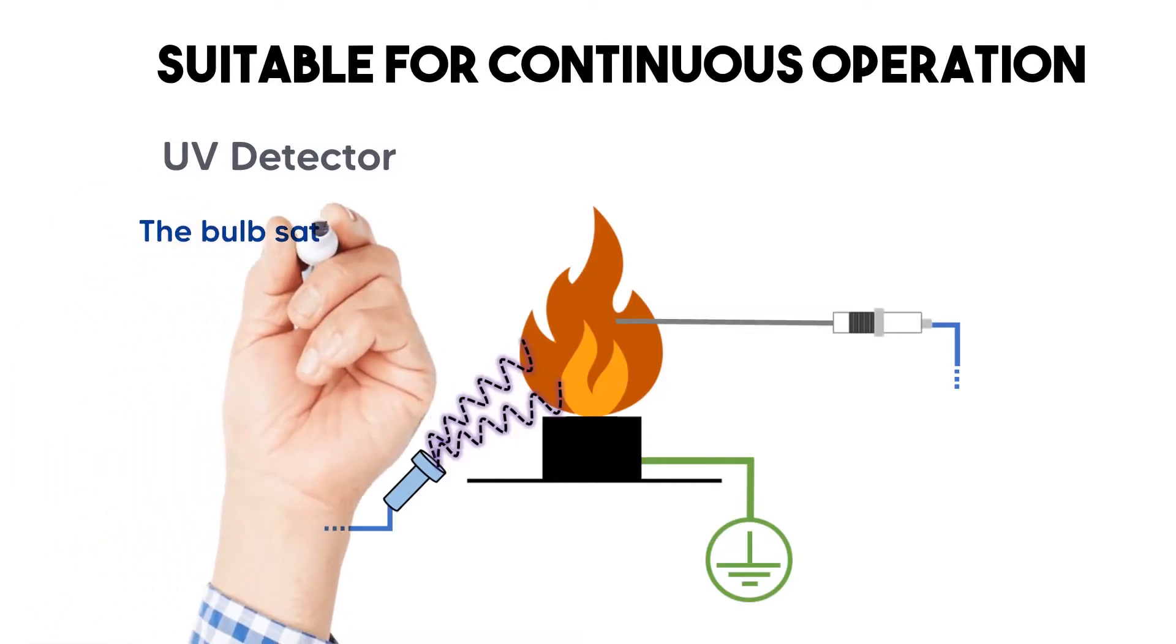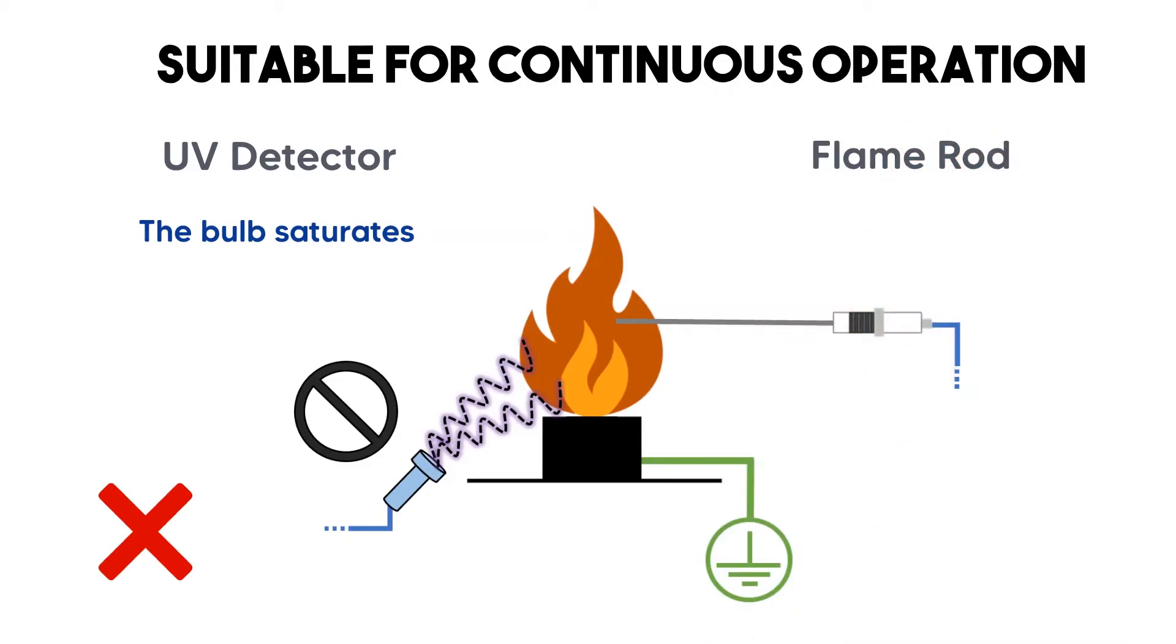The UV detector bulb can saturate and may give a false detection signal. The flame rod is a good solution in continuous operation.